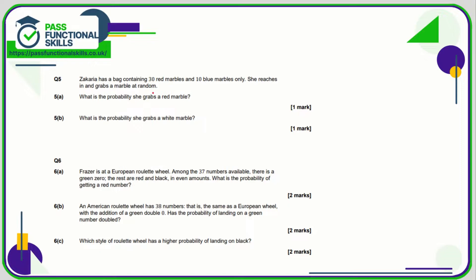Question number five: so we know that in total Zacharia has 40 marbles. So what's the probability of red? Well that's 30 out of 40, which is the same as three out of four, three quarters. And the probability of white is zero because she only has red or blue.